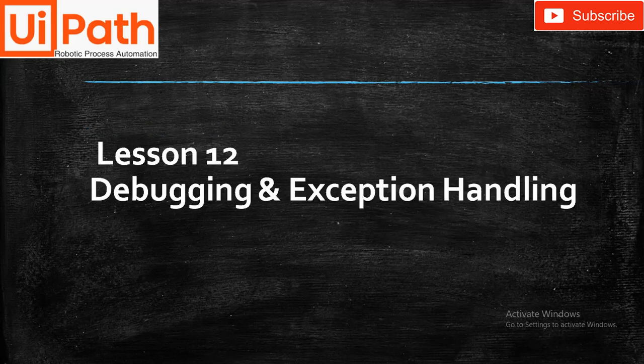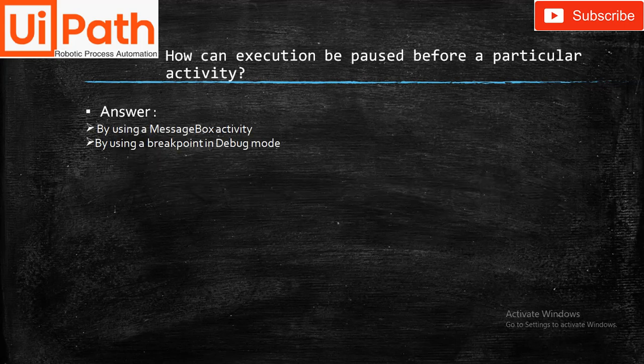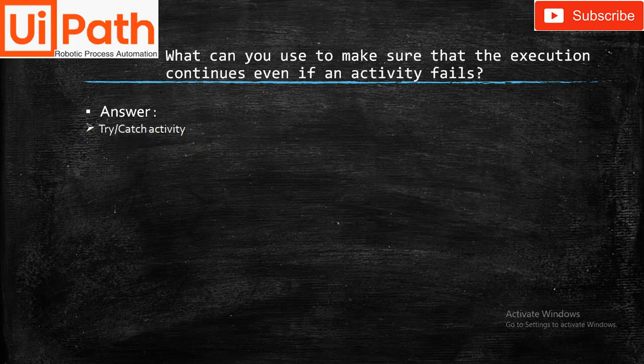Lesson 12 covers debugging and exception handling. How can execution be paused before a particular activity? By using a Message Box activity, or by using a breakpoint in debug mode. What can you use to make sure execution continues even if an activity fails? Use the Try-Catch activity.